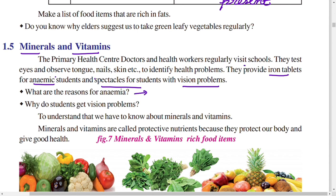They provide iron tablets for anemic students and spectacles for vision problems. What are the reasons for anemia? Anemia is a deficiency nutritional disease. There are mainly two causes: shortage of iron in the body, and vitamin deficiency anemia — vitamin B6 and B12 deficiency.